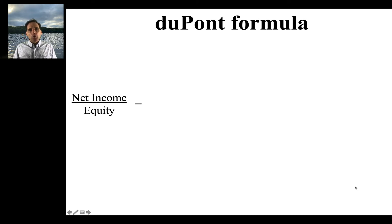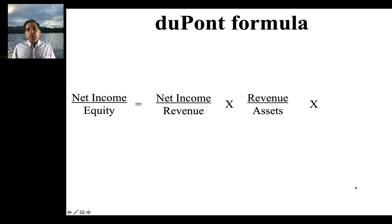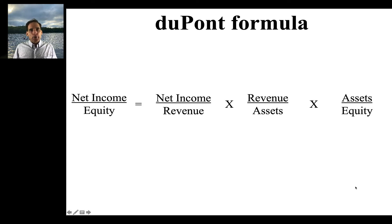Basically we're saying net income over equity equals net income over revenue — a profitability measure — times revenue over assets, times assets over equity. And when you cancel that out you come up with net income over equity.